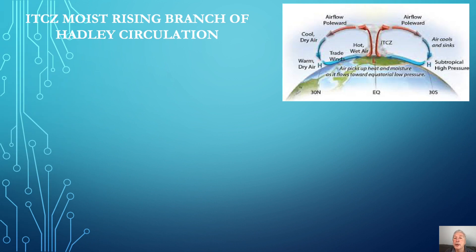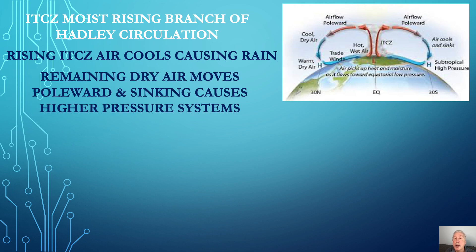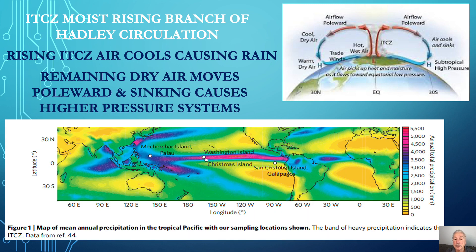The ITCZ represents the dynamical region that drives energy and momentum from the sun, pushing it from the equator towards the poles and driving the Hadley atmospheric circulation. It is the region of intense convection where moist air rises, then cools and precipitates heavy rainfall to the regions below, enabling the world's tropical rainforests. The remaining dry air diverges towards the poles, where it sinks and, between 20 and 40 degrees poleward of the equator, generates regions of dry, high-pressure systems that mark the edge of the Hadley circulation.